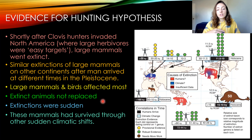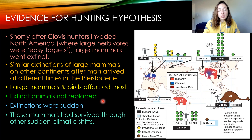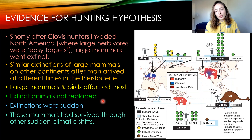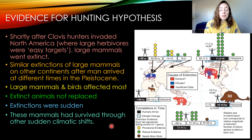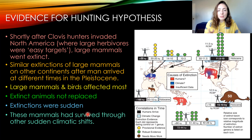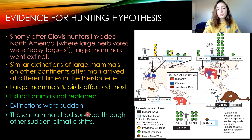Large mammals and birds were affected most, which could be because humans were specifically hunting and eating them. Extinct animals weren't replaced by anything similar — it wasn't a case of evolution or climate-driven turnover; they simply died without successors. Extinctions were also sudden. Lastly, people lean toward the hunting hypothesis because these mammals had survived through other sudden climatic shifts and cooling trends throughout the Pleistocene — so why was this particular one different?